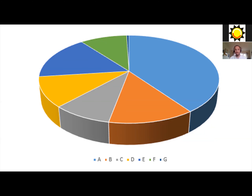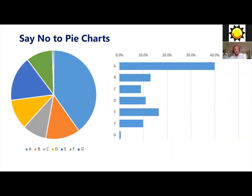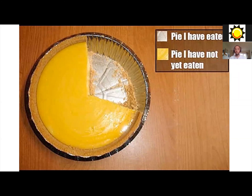Maybe we need to explode the pie to make it more exciting? No — we might think that makes it more exciting, but ultimately we're just obscuring the data and making it harder to read. Presenting data in a bar chart is, in my opinion, always much clearer. The data in the bar chart on the right is exactly the same as the data in the pie chart on the left, but when we're comparing the length of bars, we can do that so much more easily than comparing the segments of a pie.